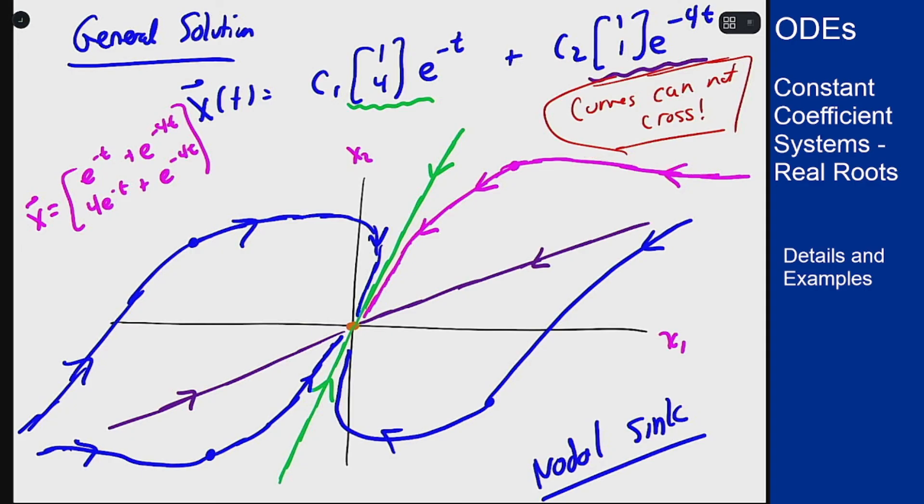There's a basic method there and following that process will get you to be able to draw these pictures for a variety of equations, at least when the eigenvalues are real and distinct. The other ones are slightly more complicated which we'll get to once we address those types of systems.